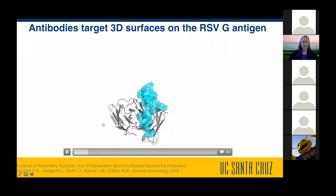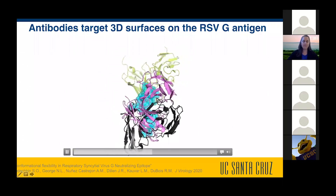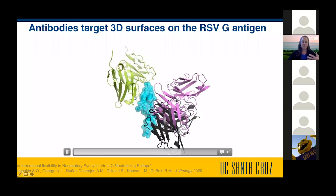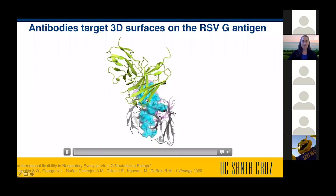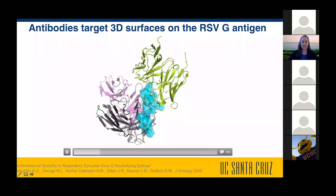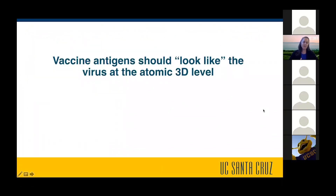We have since solved the structures of a few more antibodies shown in pink and green, and what we realize is that the human immune system has many different solutions to target viruses and block their infection. One antibody binds in one region, another antibody recognizes a different surface. When we become vaccinated with an antigen, we develop all sorts of antibodies that recognize different surfaces of a virus. The big picture of our research is the recognition that when developing a vaccine, we should create antigens that look like the virus at the atomic three-dimensional level.